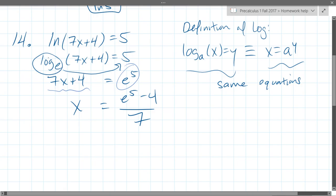We're almost done solving for X. All we're going to do is subtract 4. So subtract 4, we have E to the 5th minus 4, and then divide by 7. And this is our X value.